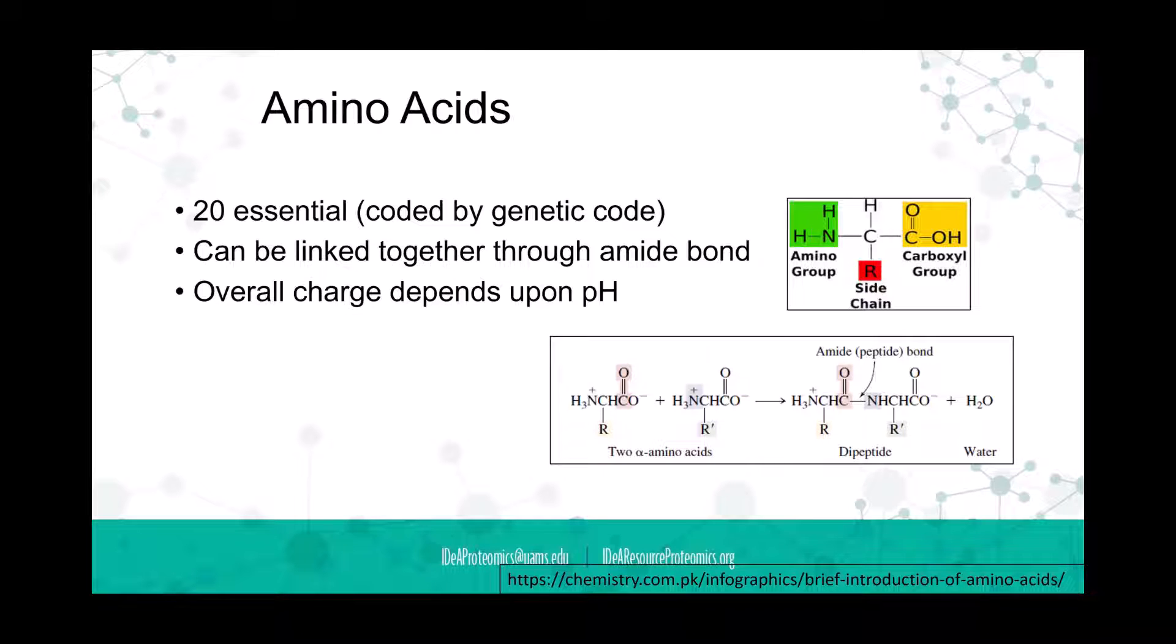The overall charge can depend upon the pH. You might notice that these alpha amino acids look a little weird in that they have both a positive and negative charge on the same molecule. That's called a zwitterion, and at physiological pH, that's the state in which you see them. Amine groups can accept protons and the carboxylic acid group can donate protons, so you end up with that positive and negative charge on them respectively.